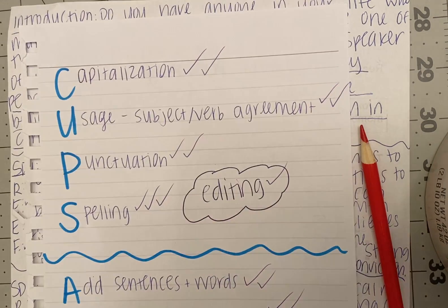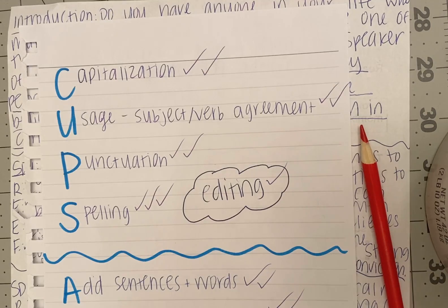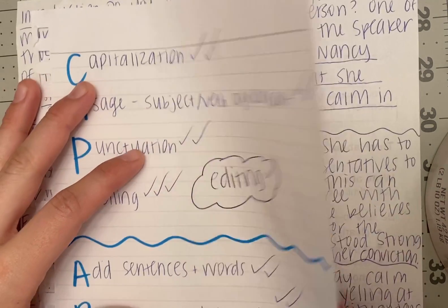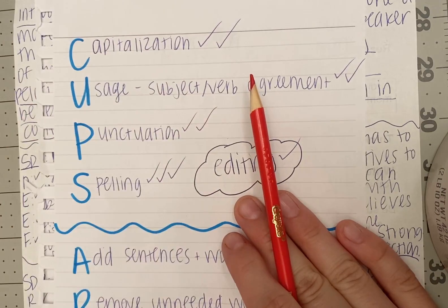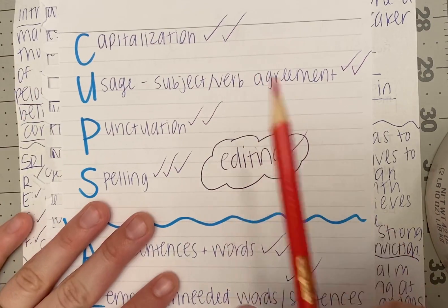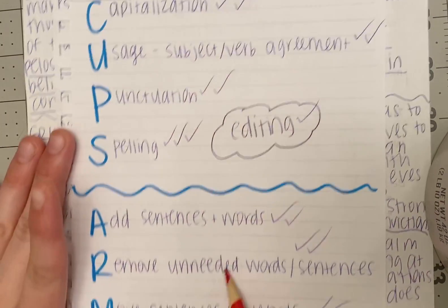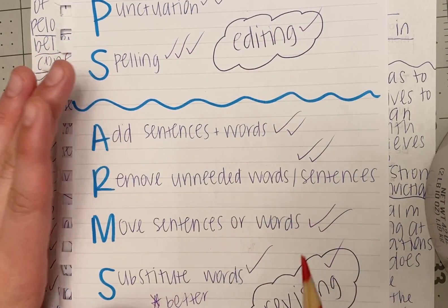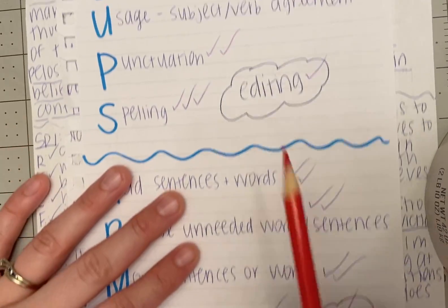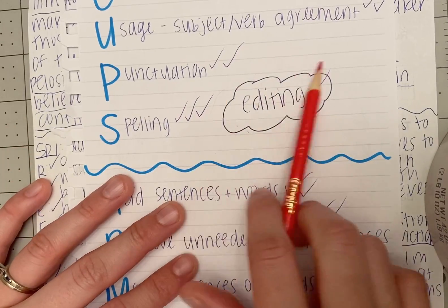We're going to use CUPS and ARMS just like we always do. So at the top of your paper or on a separate paper like I did, I want you to write CUPS and ARMS. We're going to go through the steps. We do editing first.